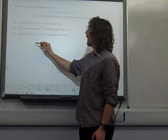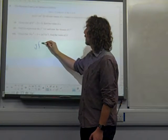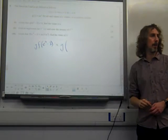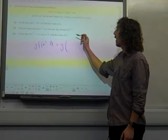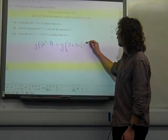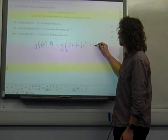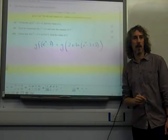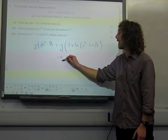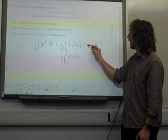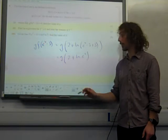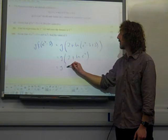So g of f of e to the 4 minus 3, that is g of, well if you sub e to the 4 minus 3 into the function f, you get 2 plus ln of e to the 4 minus 3 plus 3. That's because it's that order, so that means sub it into f first. Inside this bracket I've got 2 plus ln of e to the 4, and 2 plus ln of e to the 4 is 6, so that's g of 6.